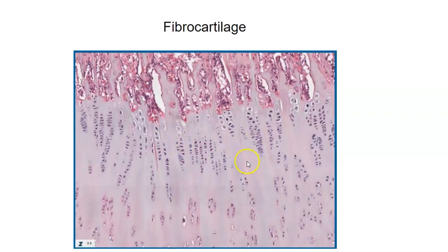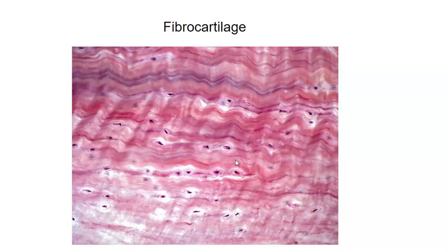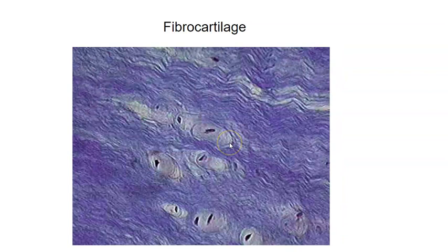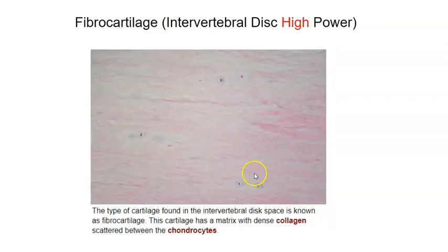Here's more fibrocartilage — chondrocytes are visible and wavy fibers are present. This is an intervertebral disc; under medium power we can see the chondrocytes, and zoomed in further we see the fibers running through it. Some slides show the fibers differently depending on the stain used — some stains really reveal the fibers well while still showing the chondrocytes.